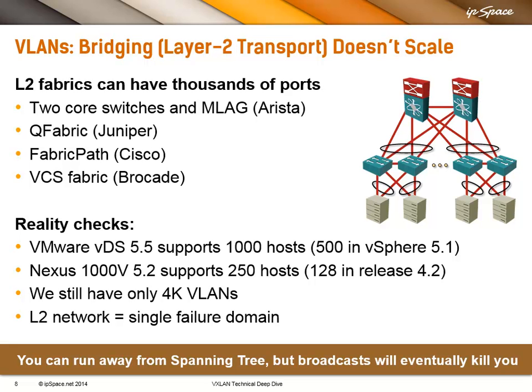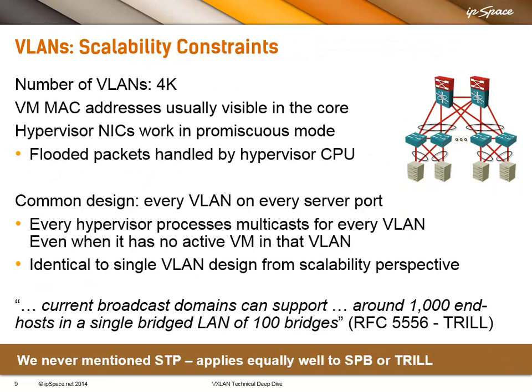The other thing that will cause severe headache is the number of MAC addresses. If you use most layer 2 fabric solutions, at least in the edge switches you'll see all the MAC addresses in the whole network, and in some solutions in the core as well. Most switches support either 64,000 or 128,000 MAC addresses, and there are even high-end switches on the market that support only 16,000 MAC addresses today. Even the designers of Trill admitted that with today's technologies, a broadcast domain can support around 1,000 end hosts.